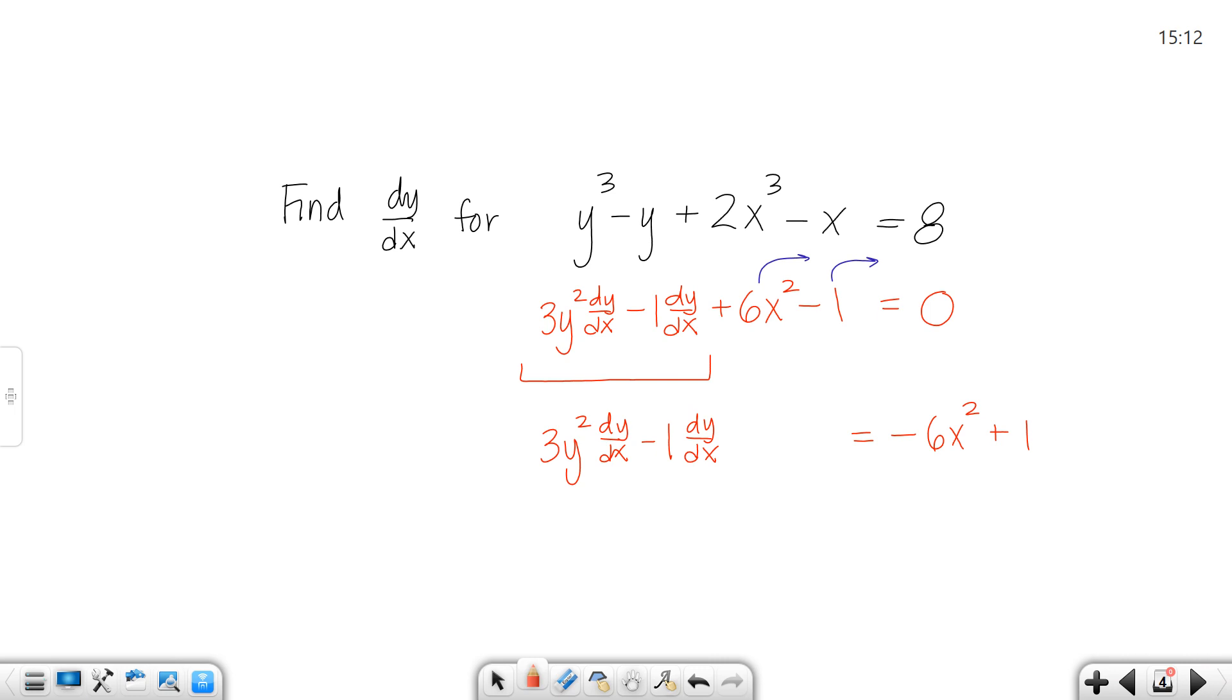Now if you read through your steps, it says make sure you differentiate with respect to x, which we did. Make sure every derivative of any term involving y, you throw a dy/dx in there. Move all dy/dx terms to one side, which is what we did. And here's the next step: factor out the dy/dx if necessary. So both of these had a dy/dx term, so I can take that out. And that leaves me with 3y² - 1.